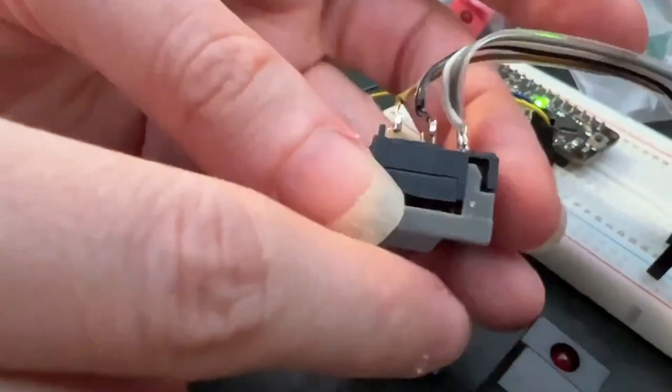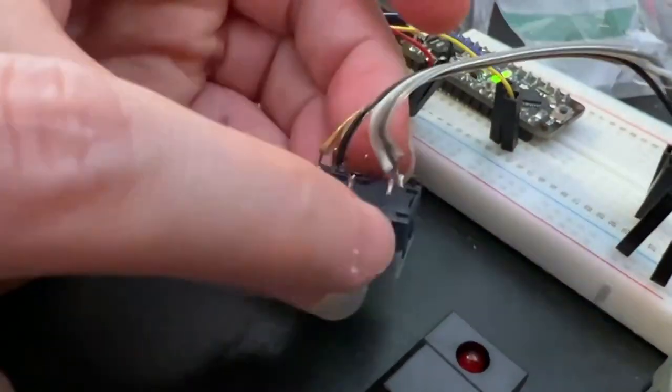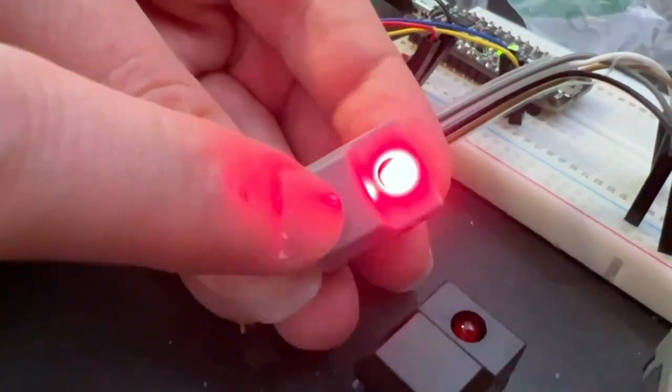So I got this sample and I just soldered it up to a breadboard so when I press the button the LED lights up. The LED is independent from the switch but I just wired it so that it turns on when I click it.